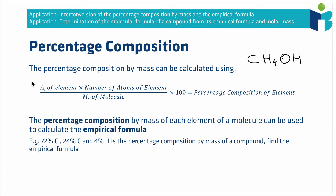The way we do that is: take the relative atomic mass of the element in question, multiply it by the number of atoms of that element in the molecule, divide by the molecular mass of the molecule itself, then multiply by 100. That gives us the percentage composition of an element — importantly, by mass.